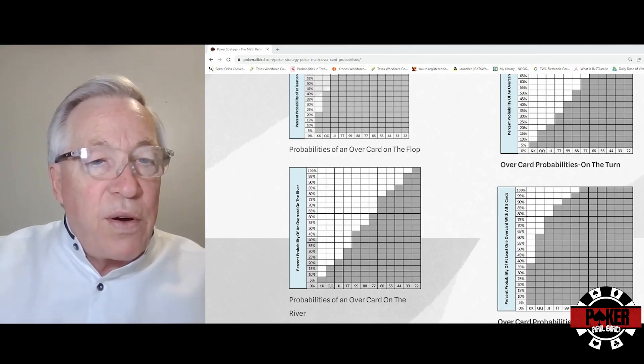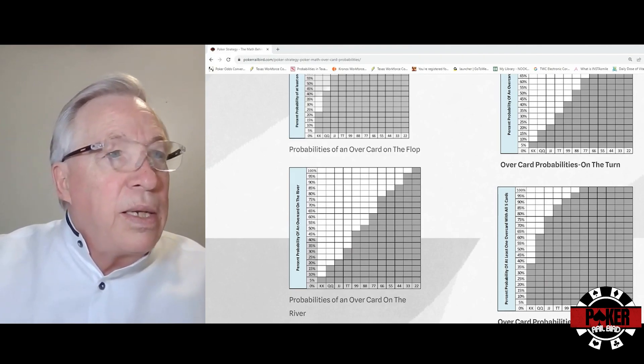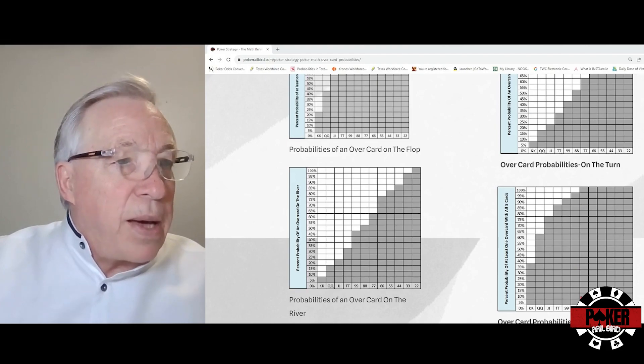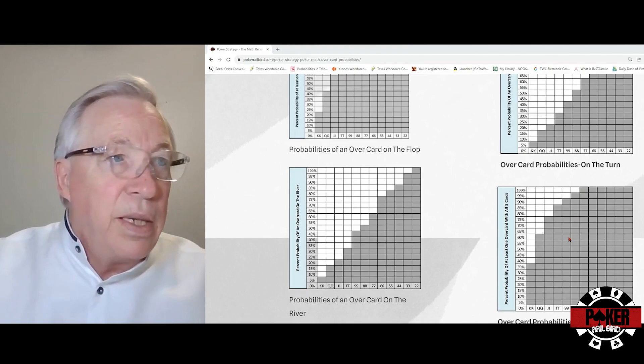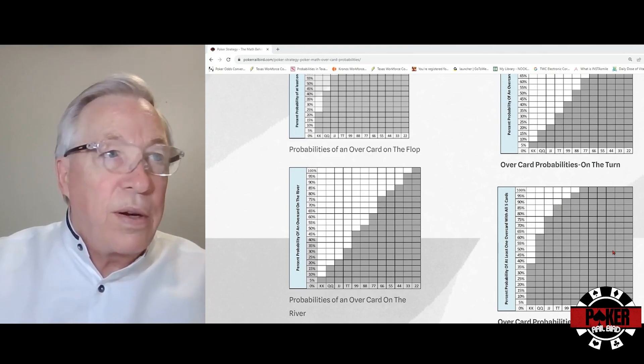If you look at all five cards on the board, that means with our pocket sevens we're a 100 percent chance of an overcard coming, and with our pocket tens we're an 85 percent chance of an overcard coming.